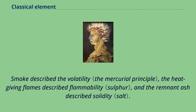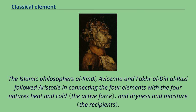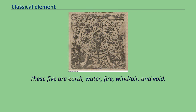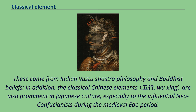The Islamic philosophers al-Kindi, Avicenna, and Fakhr al-Din al-Razi followed Aristotle in connecting the four elements with the four natures: heat and cold, and dryness and moisture. Japanese traditions use a set of elements called the godai. These five are earth, water, fire, wind or air, and void. These came from Indian Vastushastra philosophy and Buddhist beliefs. In addition, the classical Chinese elements are also prominent in Japanese culture, especially to the influential Neo-Confucianists during the medieval Edo period.